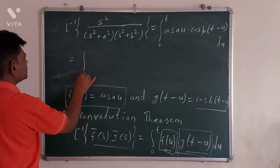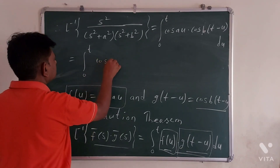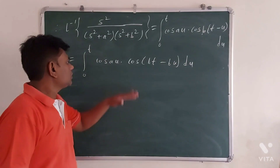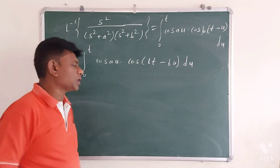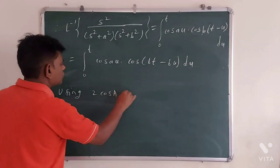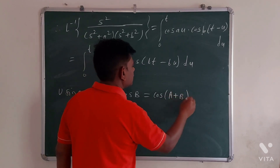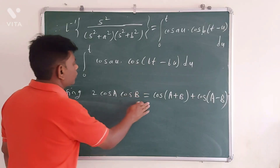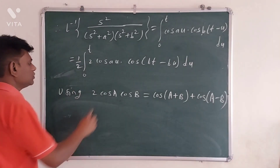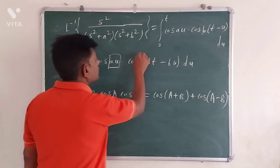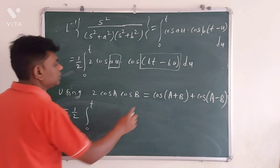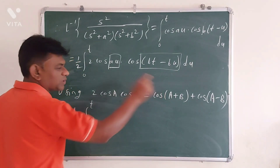Now this equals the integral from 0 to t of cos(au) times cos(b(t minus u)) du. For this integral, we recall the product-to-sum formula: 2 cos(A) cos(B) equals cos(A plus B) plus cos(A minus B). We multiply and balance by one half, where capital A means au and capital B means b(t minus u).